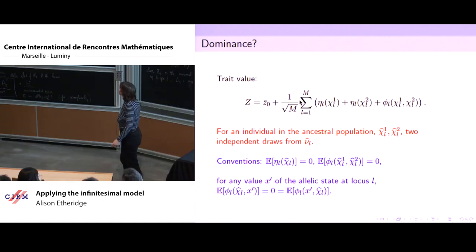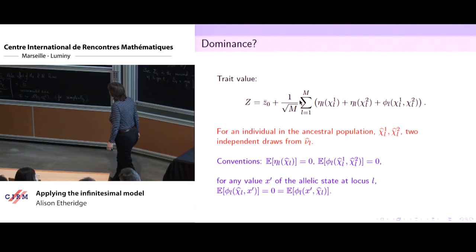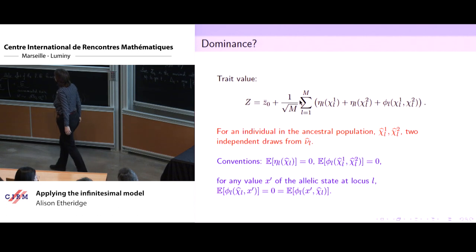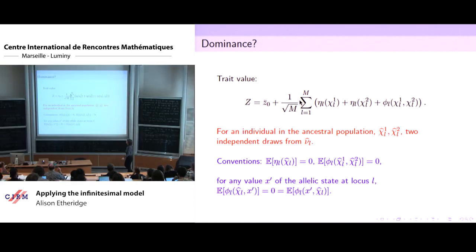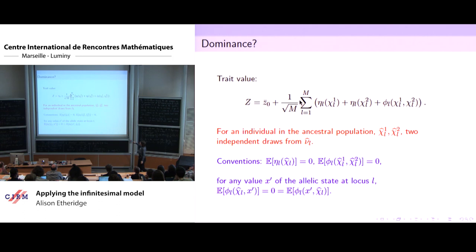If we want to incorporate dominance, we're going to have to go to individuals carrying two copies of each allele. We'll write our genetic component of the trait value similarly to what Amundin did: there's some underlying mean, the additive effects we saw before, and now we have the dominance component which depends on the two alleles that an individual carries.